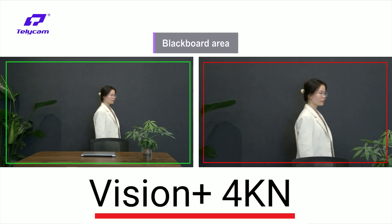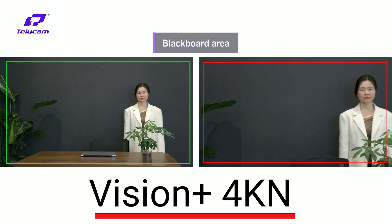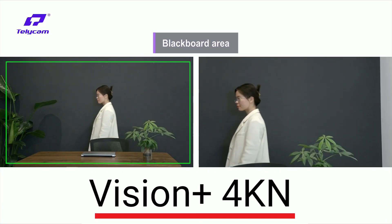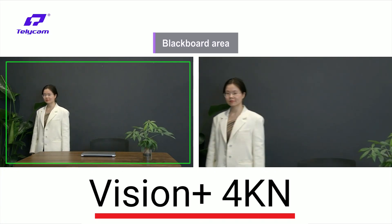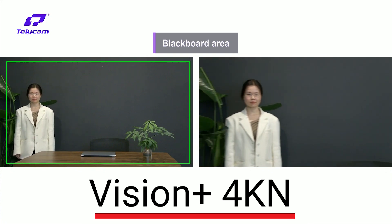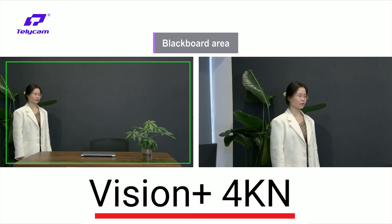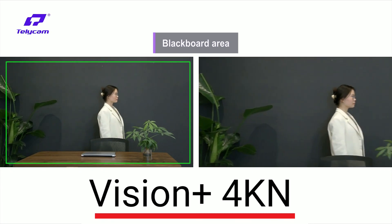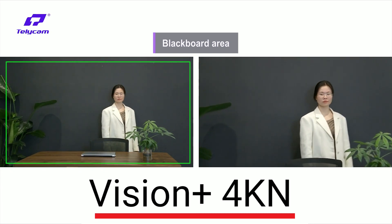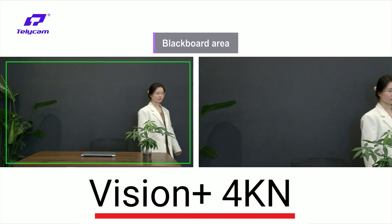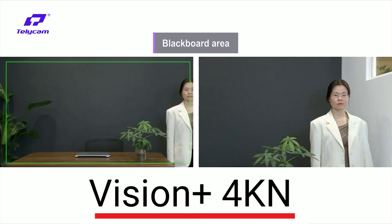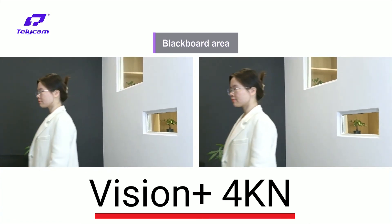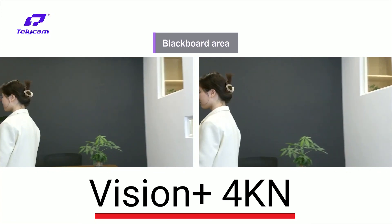When the target goes out of the blackboard area, like the footage on the right, the tracking will be resumed. This function is frequently used during classes and meetings so that the speaker's small movements from side to side will not affect the audience's viewing of the blackboard.